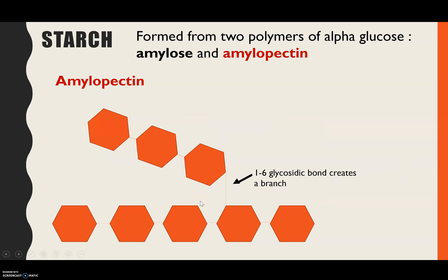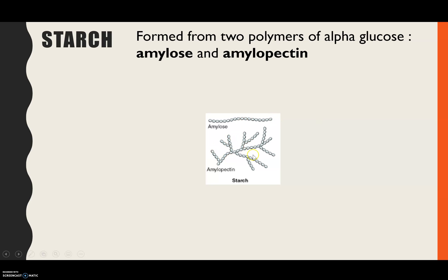Amylopectin is also formed by condensation reactions. The lower part contains 1 to 4 glycosidic bonds, giving a straight chain. At certain locations, part of it branches off — this branching is created by a 1 to 6 glycosidic bond, between carbon 1 of one glucose molecule and carbon 6. Due to that location, it causes a branch. So amylopectin is quite a branched polymer, whereas amylose is a straight polymer which spirals up into a helix.